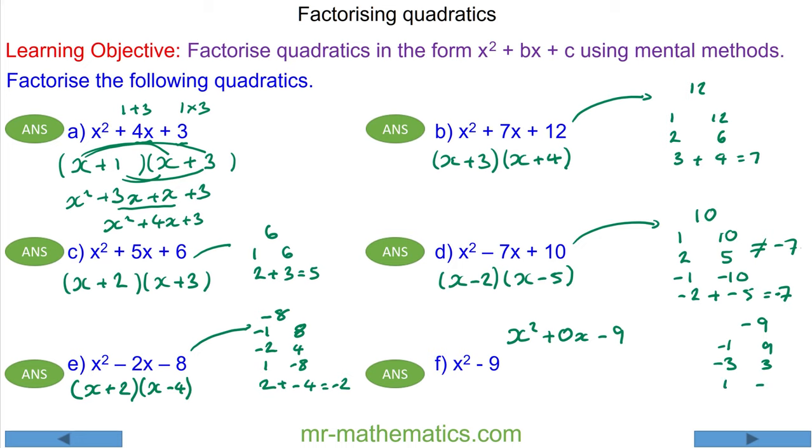But we must add to make 0, which is negative 3 add 3. So the factorization is x minus 3 and x plus 3. This is also called the difference of two squares. The x squared and 9 are two square numbers. Thank you for watching, and I do hope you found that useful.